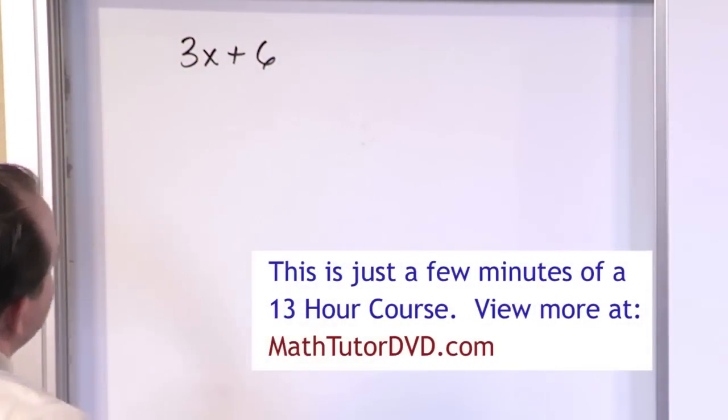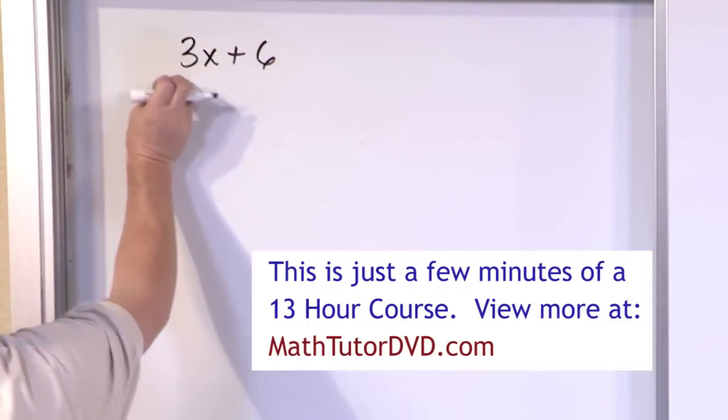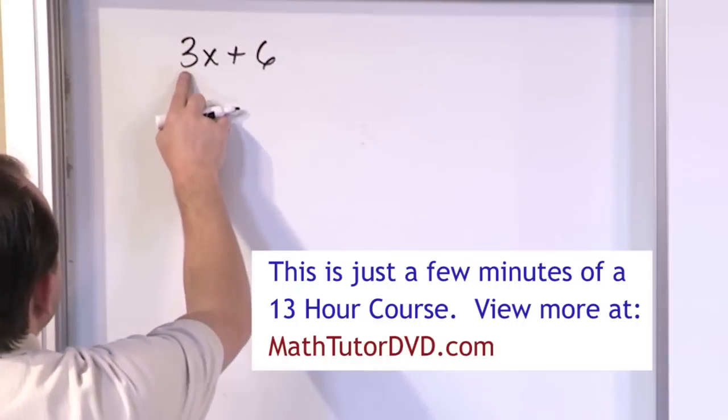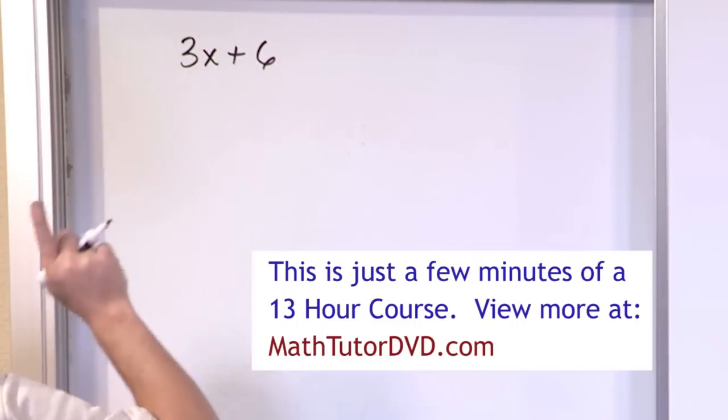So there's an x here, but there's no x there. So there's no way that I could pull x out of this expression, because it's not common to both things. You might say there's a 3 here and there's a 6 here, so there's nothing in common. However...